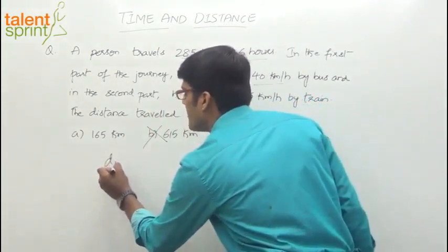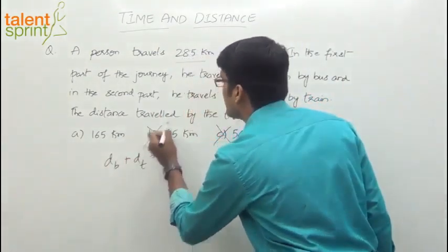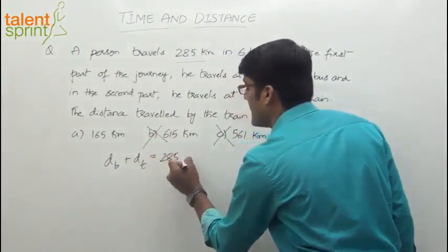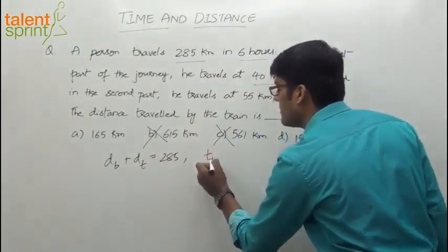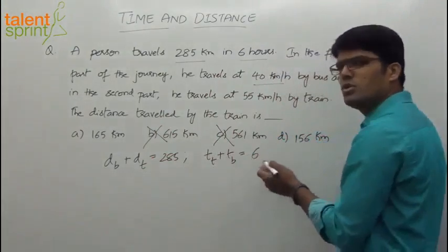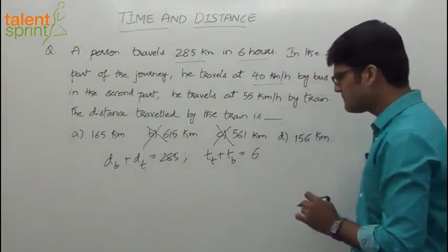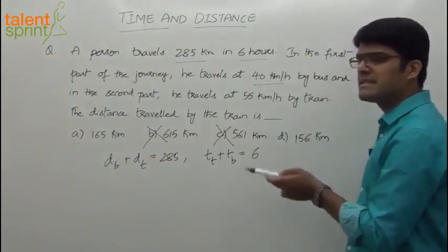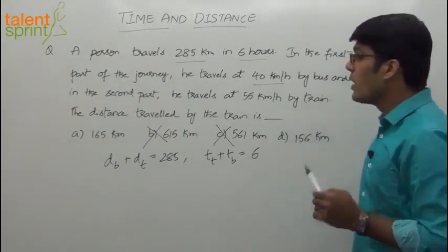Total distance is 285. So we can say distance covered by bus plus distance covered by train is 285. And then time required to travel by train plus time required to travel by bus is equal to 6 hours. Two equations you will be able to solve. One is the distance equation, the other is the time equation.